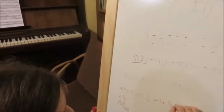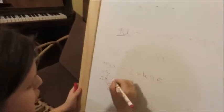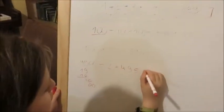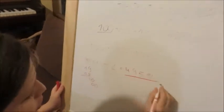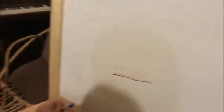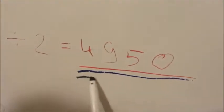And we get 1, we carry down the 0, 5, we get 0, 10 minus 10 is 0, and we carry down the 0, and at the end we get 0. So, our answer is 4,950.